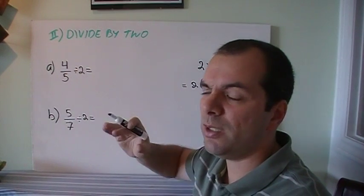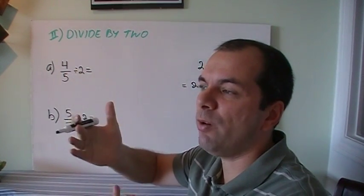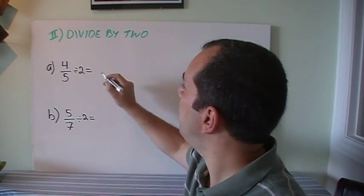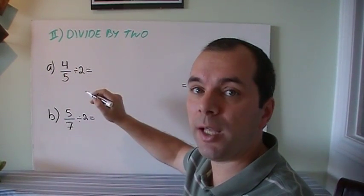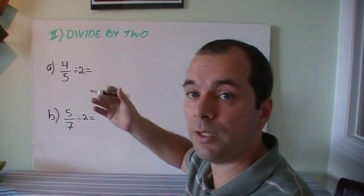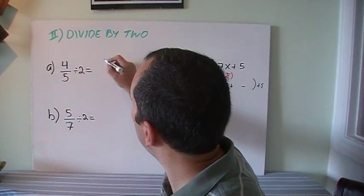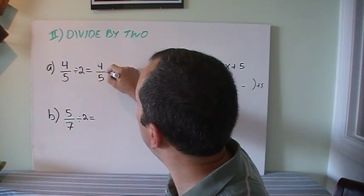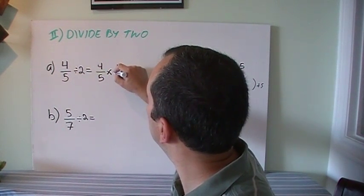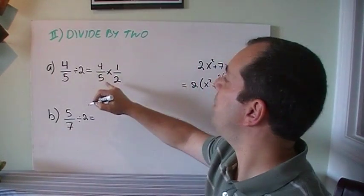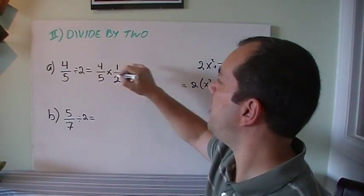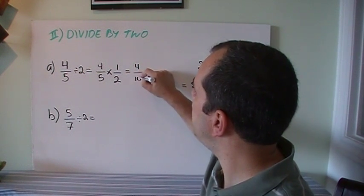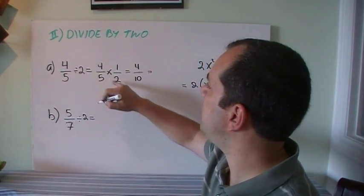But I may do it the long way. Dividing by 2 is like multiplying by 1/2, the reciprocal. So I'll do it the long way. 4/5 is like 4/5 times 1/2. Well, I'll just multiply the tops. And that's 4, and 5 times 2 is 10.